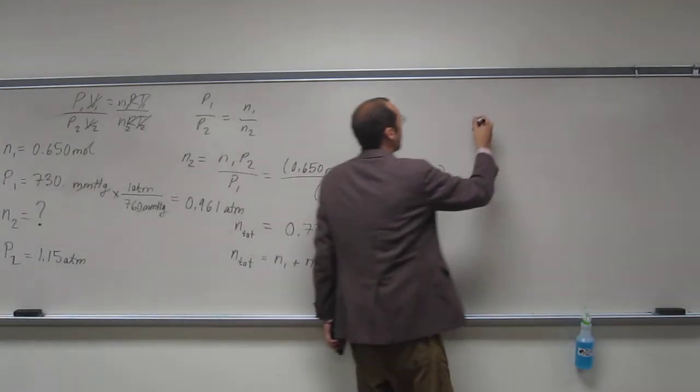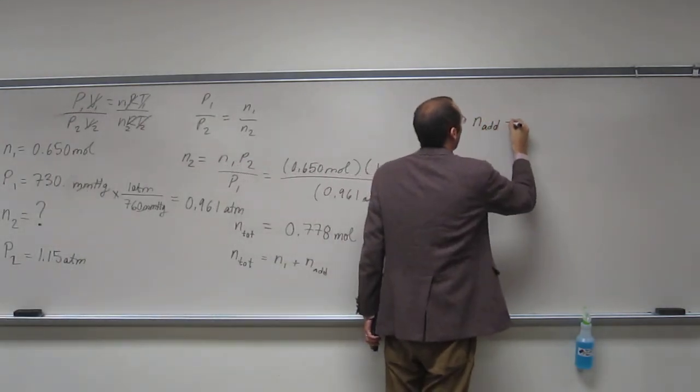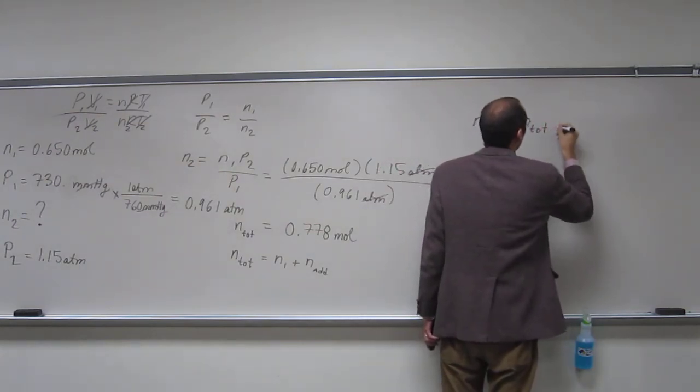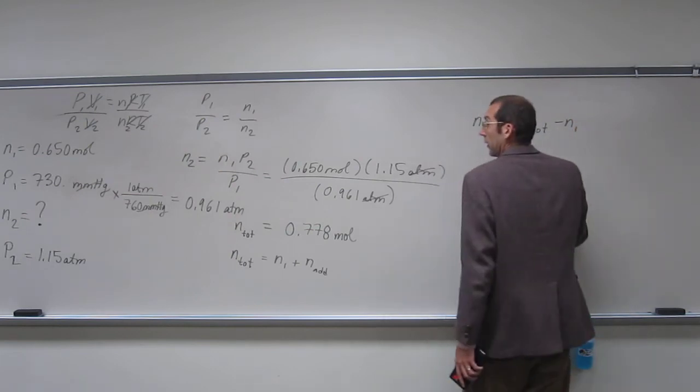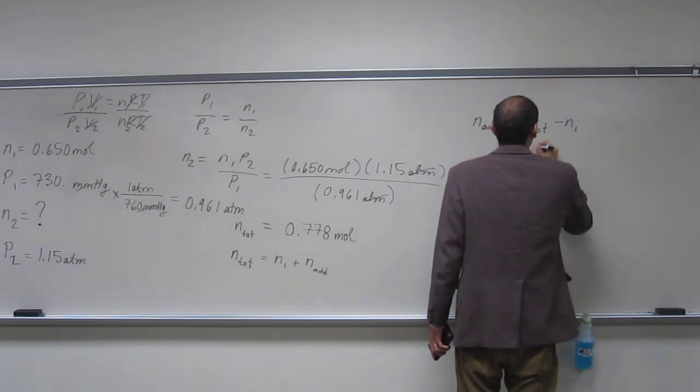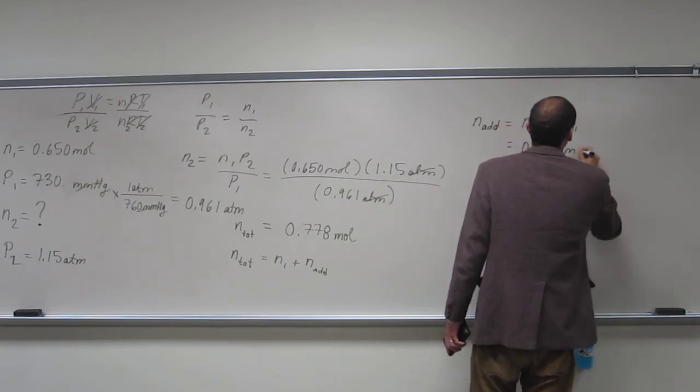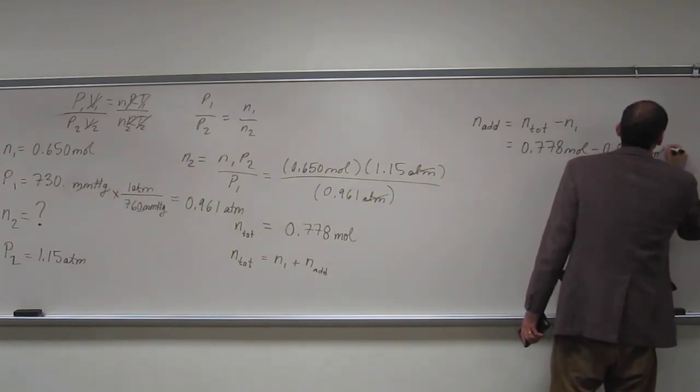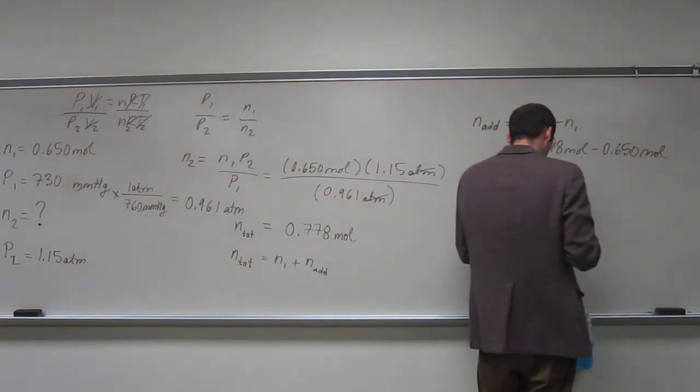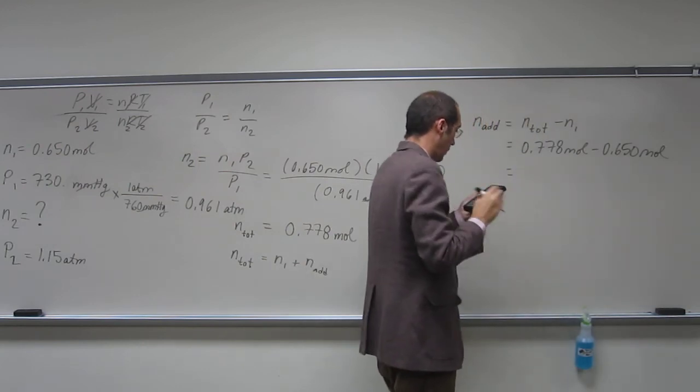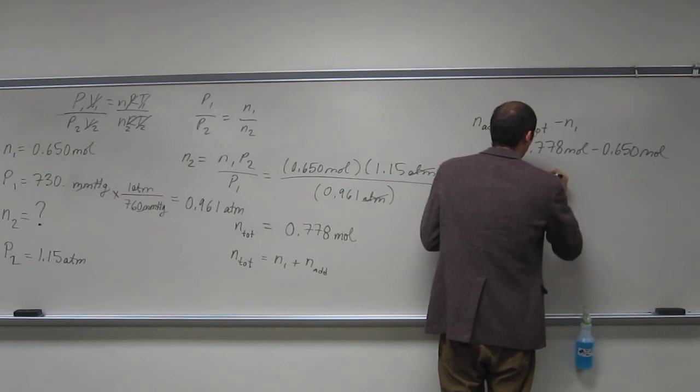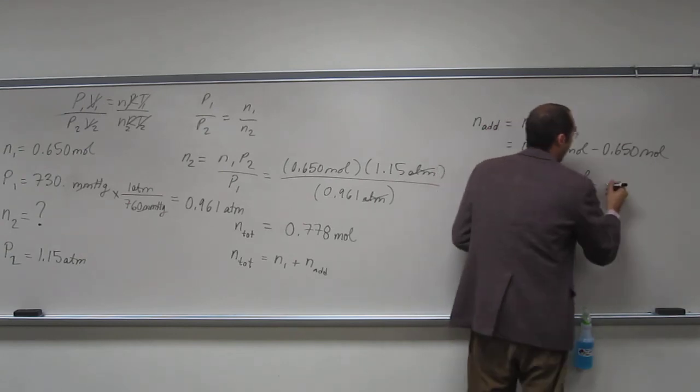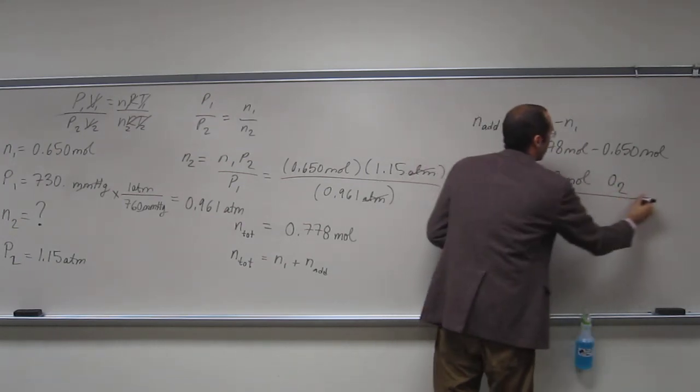So, in order to figure out the number of moles that were added, it's going to be the total minus the initial. In this case, 0.778 moles minus 0.650 moles. And the answer would be 0.128 moles of gas or O2, oxygen were added.